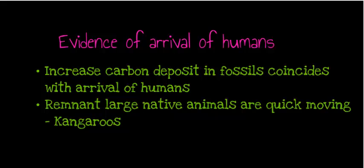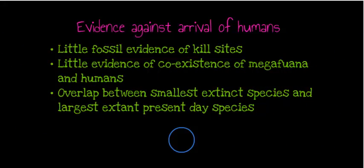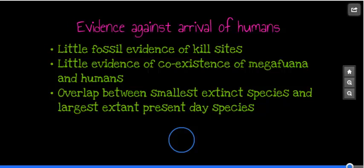A point of contention is that Diprotodon, the large wombat-like animal, appears to have been living about 30,000 years ago on the Liverpool Plains, meaning it co-existed with humans. Evidence against the human arrival theory includes little fossil evidence of kill sites from fire-stick farming, little evidence of coexistence of megafauna and humans more broadly, and an overlap between the smallest extinct species and the largest extant species — some smaller organisms became extinct while larger ones like kangaroos survive today.